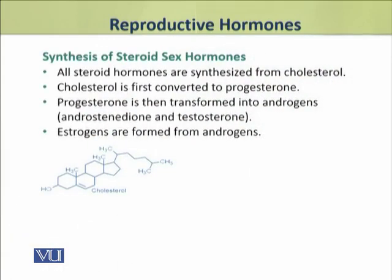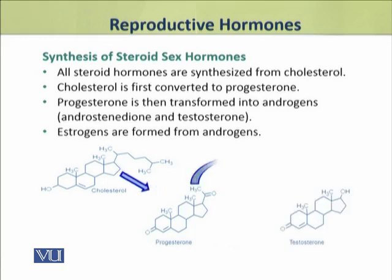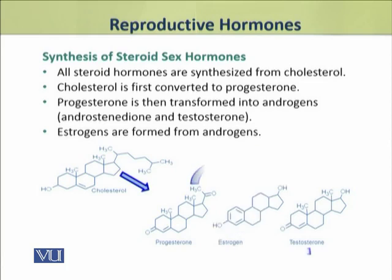The steroid sex hormones are synthesized from cholesterol. Cholesterol is the parent molecule from which all steroid hormones are made. Cholesterol is then transformed into androgens, such as testosterone and androstenedione. Androgens are then converted into estrogens. So the pathway is: cholesterol → progesterone → androgens → estrogens.